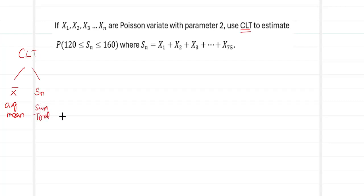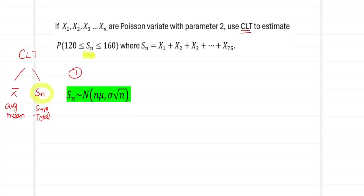In this problem, it is directly given that the problem is on s_n. So we are going to use s_n in the central limit theorem. Step 1 is choosing the formula corresponding to s_n. We recollect that s_n follows a normal distribution with mean equal to n·μ and standard deviation equal to σ·√n.